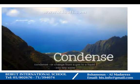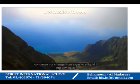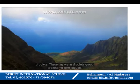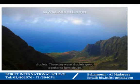As water vapor rises high into the sky, colder temperatures cause it to condense. These tiny water droplets group together to form clouds. These clouds later rain, and water falls back to earth's surface.